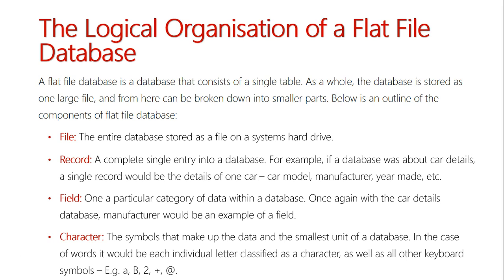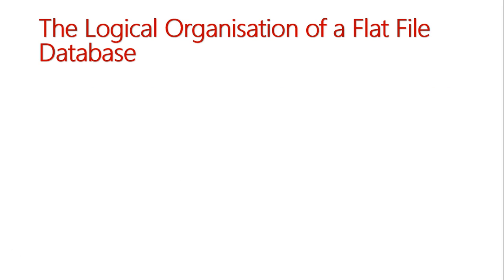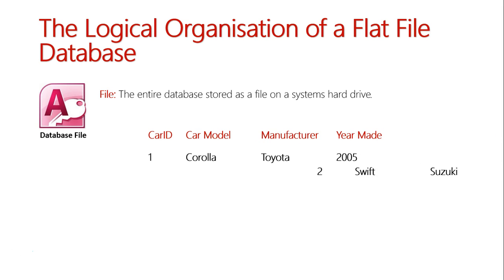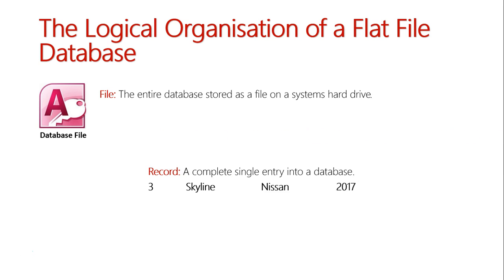Let's try to illustrate all these components now. Firstly, we have the largest part, which is the file — the file that encapsulates everything. It's what I click on to open up my database. Once I click on my file, I'll be presented with the database table, and here we have a combination of fields and records. An individual entry on its own is a record — one complete single entry of data.